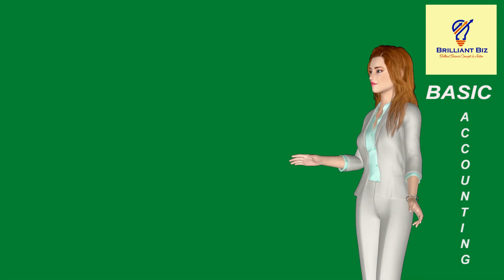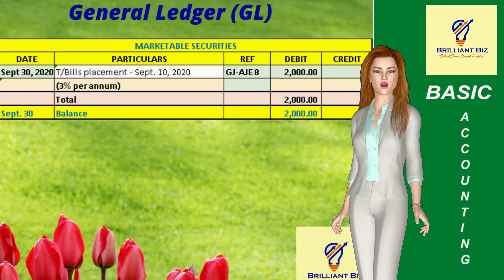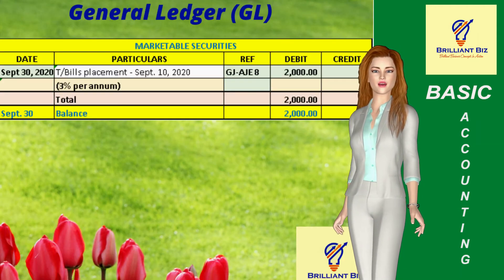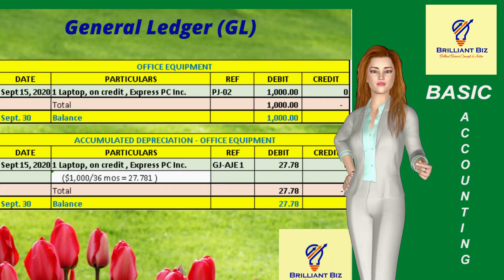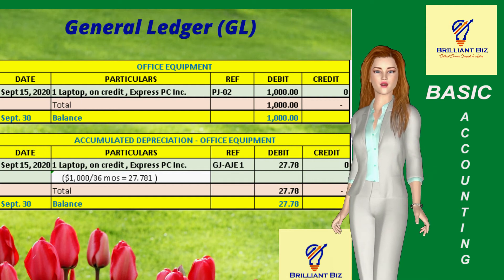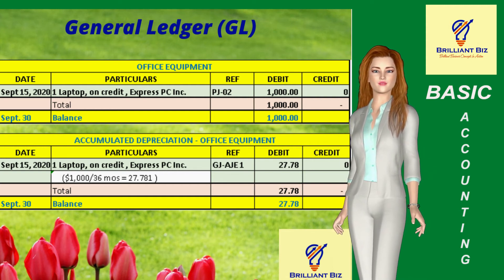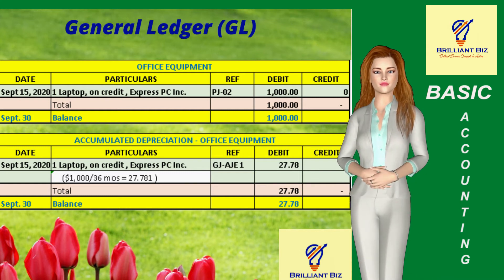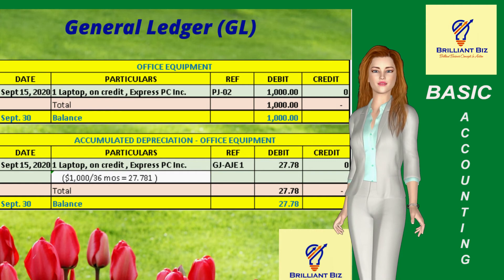This is the general ledger of the marketable securities account, which represents an investment in treasury bills. This is the general ledger of the office equipment account, which represents one laptop bought by the company for business use. Below is the general ledger of the accumulated depreciation of office equipment account, which represents the total depreciation expenses.